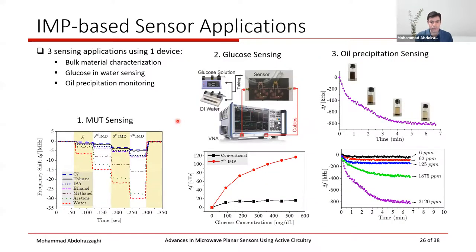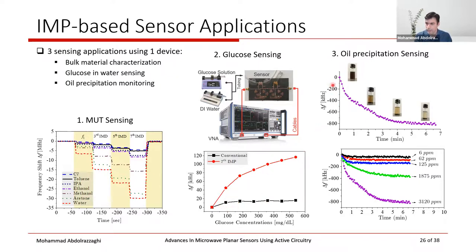The intermodulation-based sensor is demonstrated for three applications. For MUT sensing, various bulk materials — water, acetone, methanol, ethanol, IPA, toluene, and C7 — produce variations in F1, while third, fifth, and seventh intermodulation products show double, triple, and quadruple effects respectively. Improvement in glucose-in-water sensing and oil precipitation detection at very small concentrations is also shown.